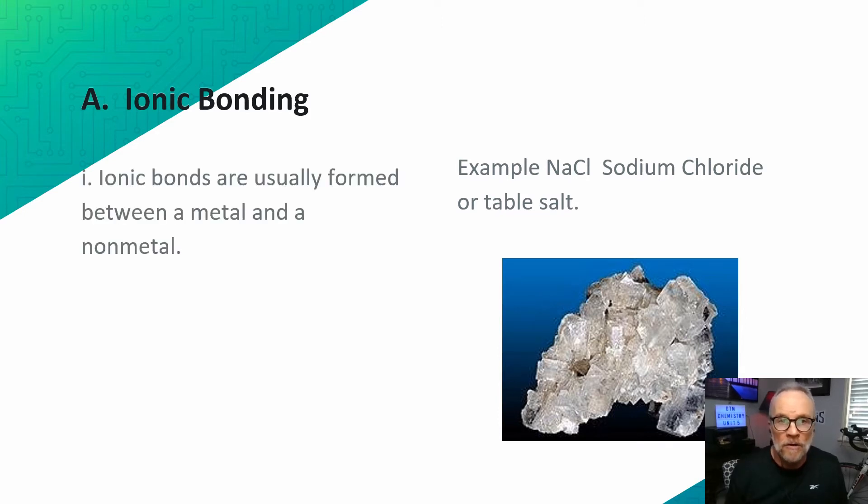Ionic bonding occurs because of metals tending to lose electrons and non-metals tending to gain electrons. This is the general pattern. Most ionic bonds are formed between a metal and a non-metal. The metal loses an electron to become a cation, and the non-metal gains an electron to become an anion. Then those two ions attract each other and form a crystalline lattice.